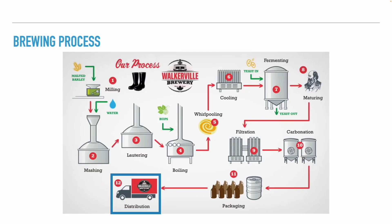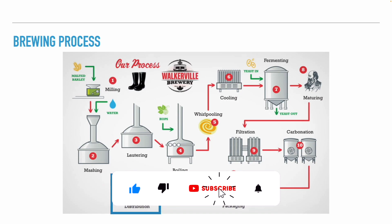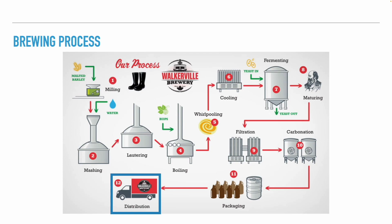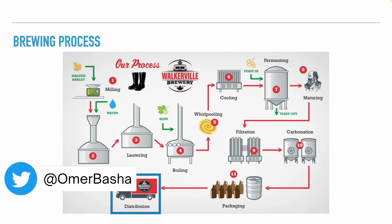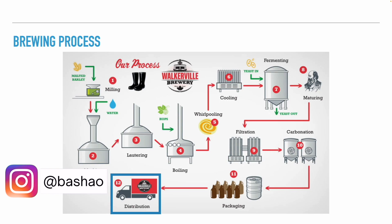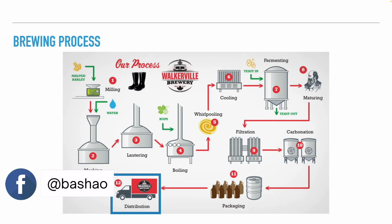After the beer is packaged, the next and final step is to distribute it to retailers and then to consumers. This is where we finish the second presentation of the beer course about a brewing process overview. If you liked the video, please hit the subscribe button, like button, and the bell icon. Write any questions in the comments and I will answer. You can find my social media handles on screen or in the description. Thank you for listening — I was Omer Basha, and see you in the next meeting where we will discuss grains and malt.